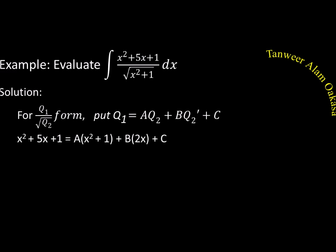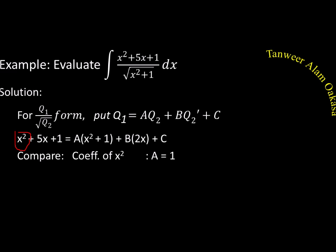So x² + 5x + 1 = A·(x² + 1) + B·Q2' + C. Our Q2 is x² + 1, so Q2' is 2x, giving B·2x. To find A, we compare the coefficients of x²: on the left it is 1, and on the right it is A, so A = 1.